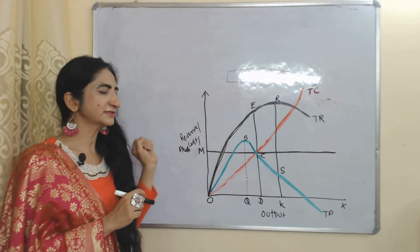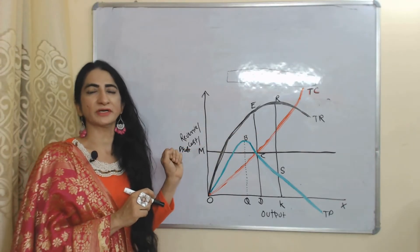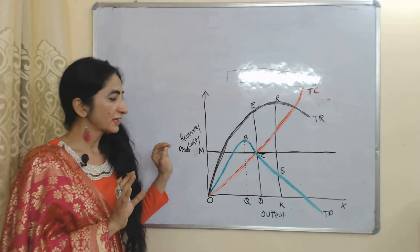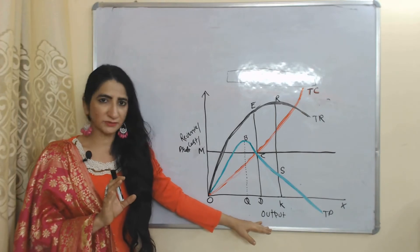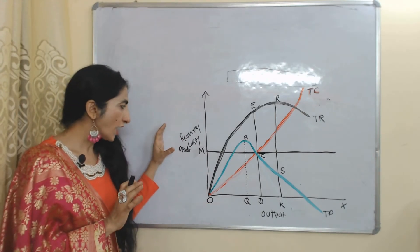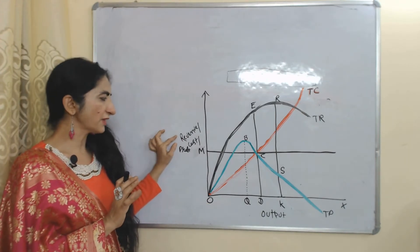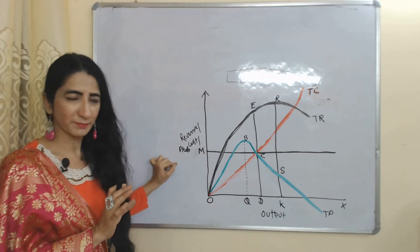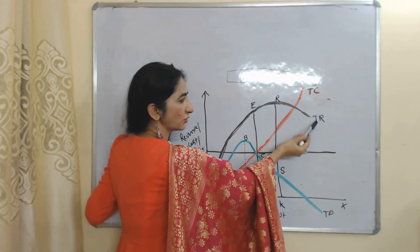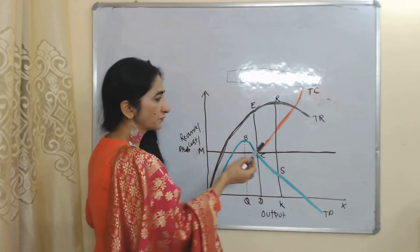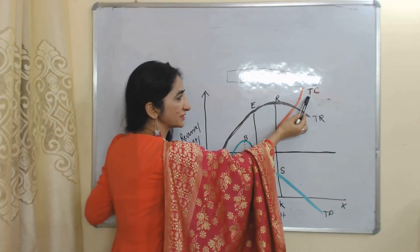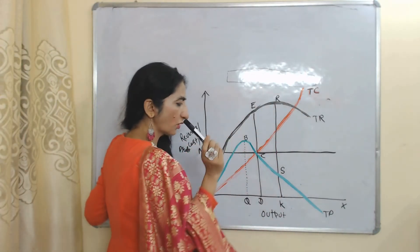Now we understand this model with the help of this diagram. On the x-axis we have output, and on the y-axis we have revenue, cost, and profit. The TR curve represents total revenue and the TC curve represents total cost.